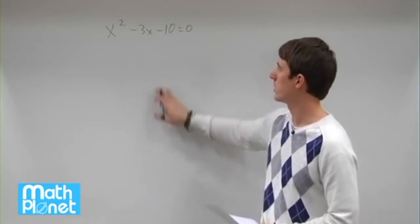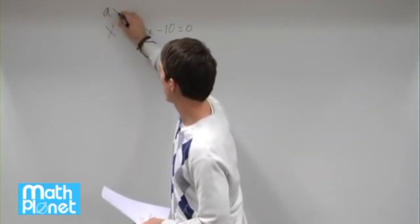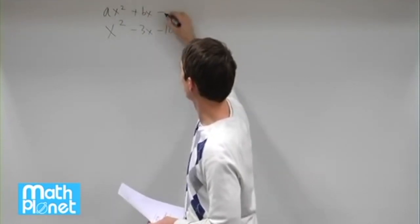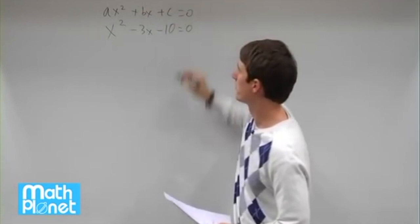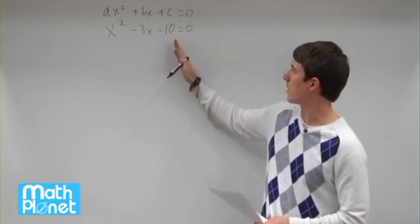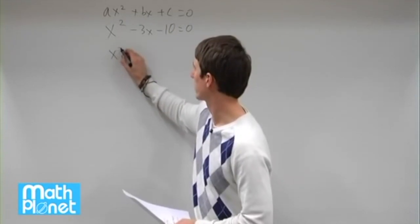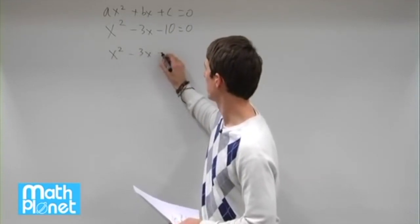Step number one: move this term so we have this in the form ax² plus bx plus c equals 0. So the first thing we want to do is move the c term to the other side. So we have x² - 3x = 10.